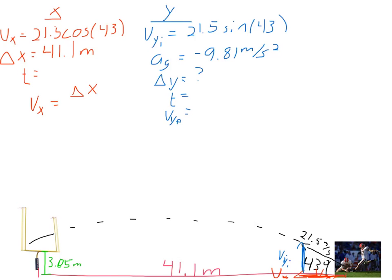VX equals delta X over T, constant velocity in the X axis. So whenever you plug 21.5 cosine 43, which is the velocity in the X axis, whenever you plug that into your calculator, you come out with 15.7 approximately meters per second. And then it's 41.1 meters divided by time. So time is going to equal 41.1 divided by 15.7. I had to multiply T to the other side and then divide the 15.7 over. So now I've got T equals 0.707 seconds.